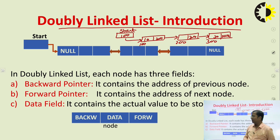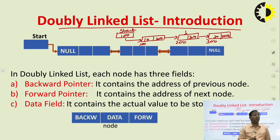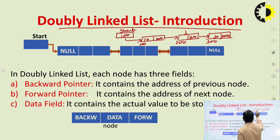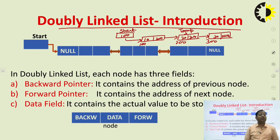Another limitation is from any current node — if this is a current node — we can get the address of the next node. Suppose currently we are at the second node.